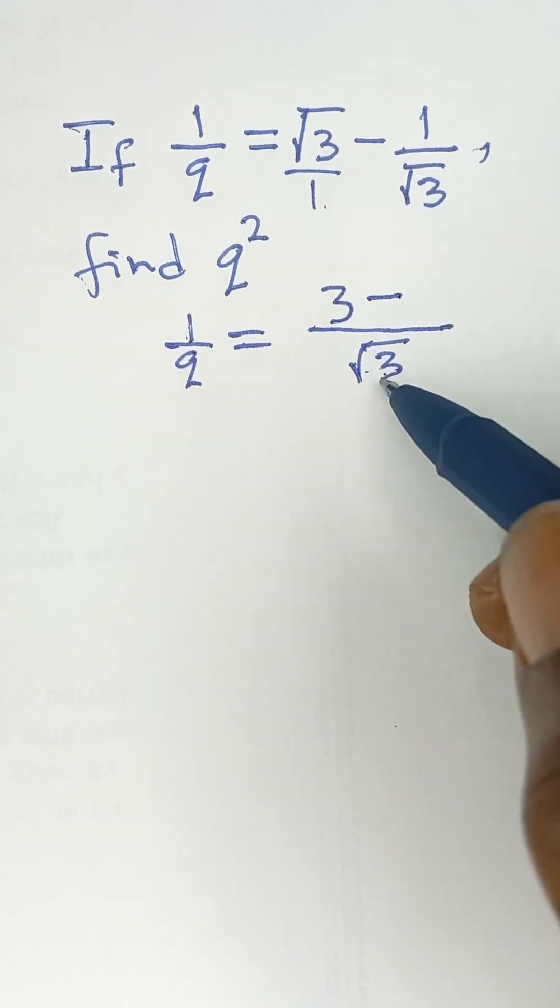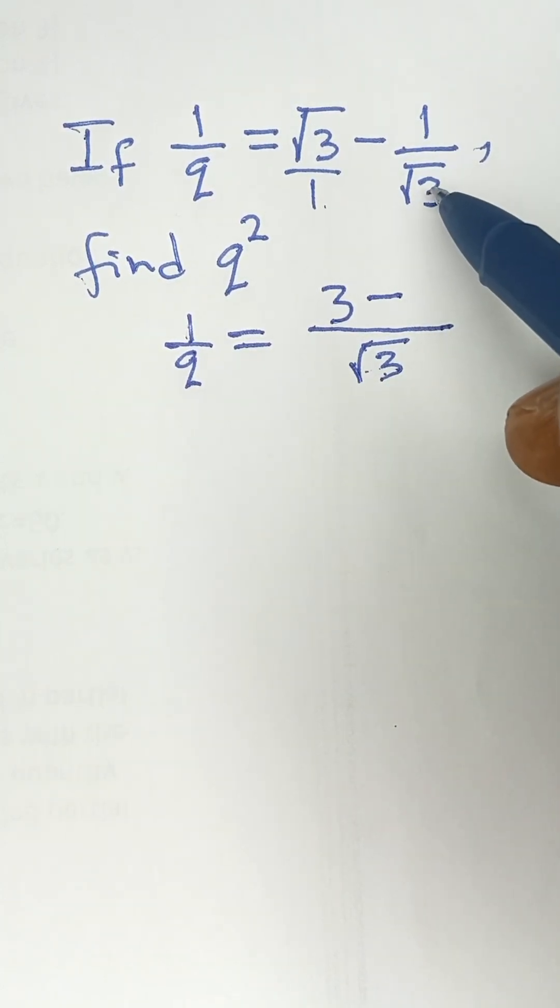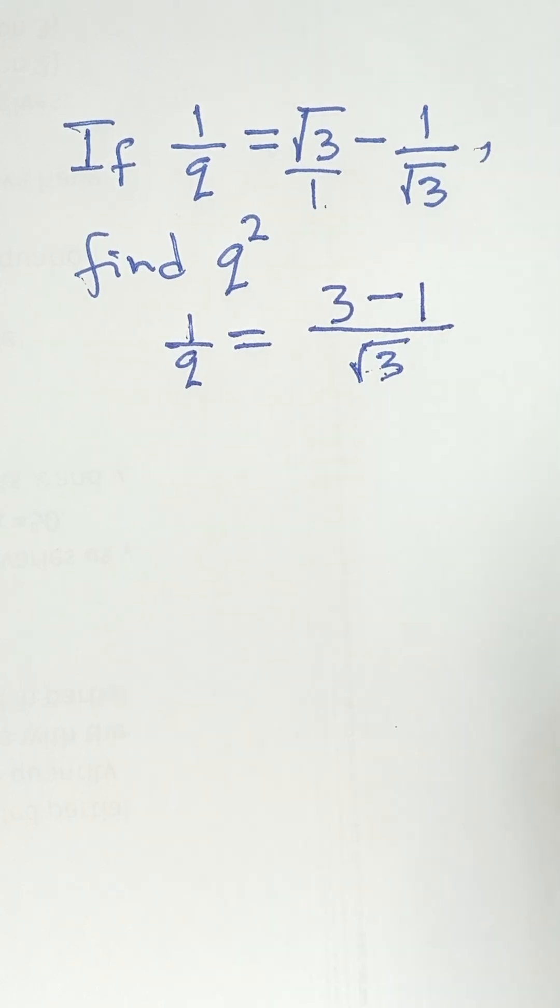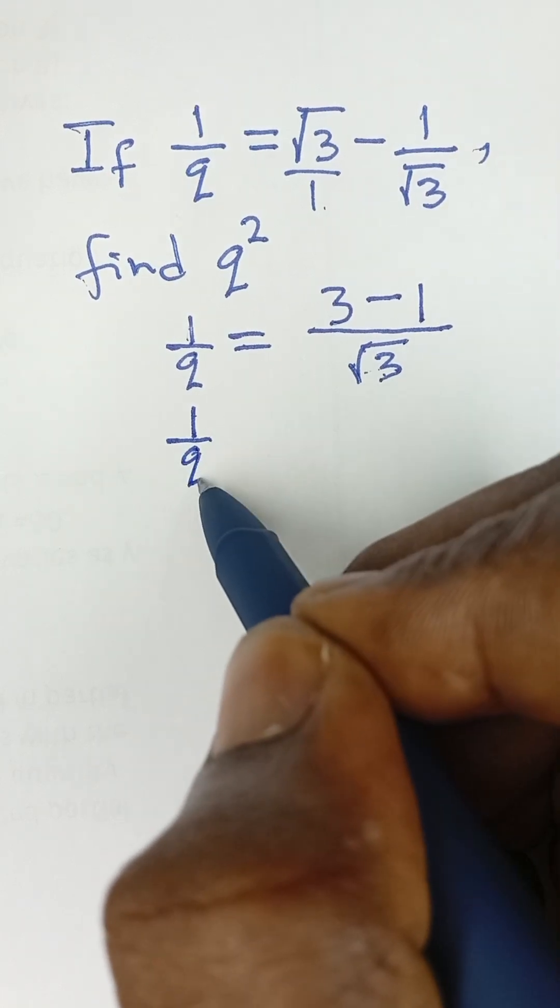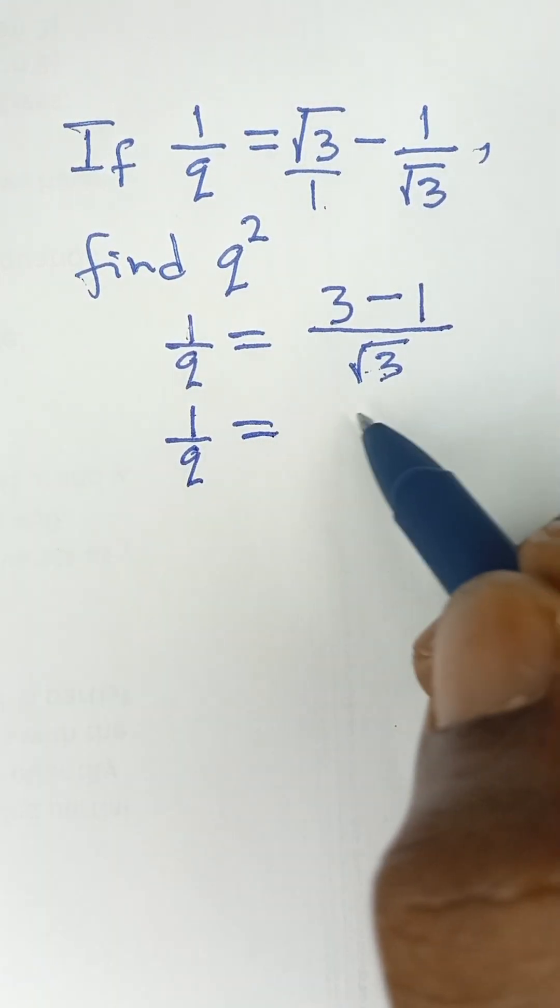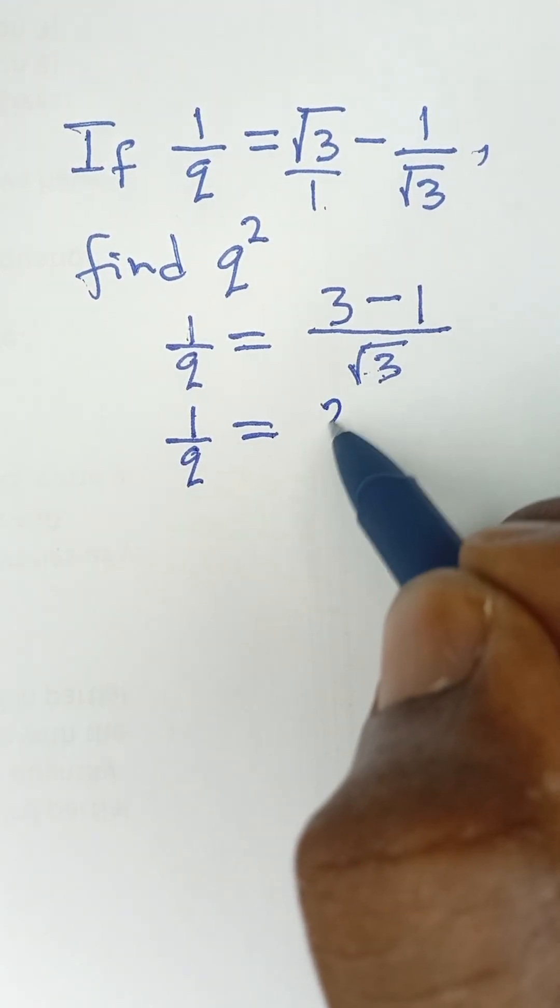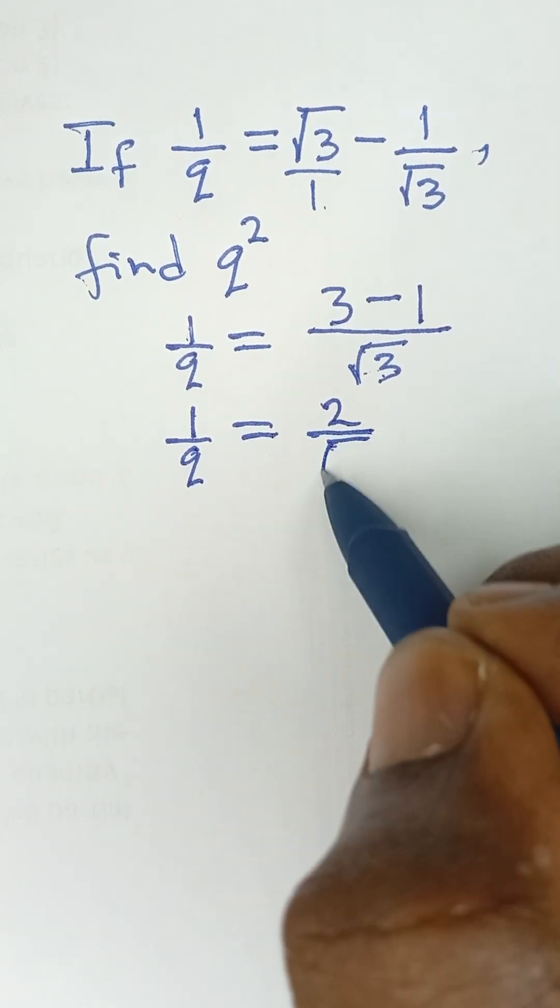Then minus root 3 divided by root 3 is 1. 1 multiplied by 1 is simply 1. So finally, I can say 1 over Q is equal to 3 minus 1, which is 2 over root 3.